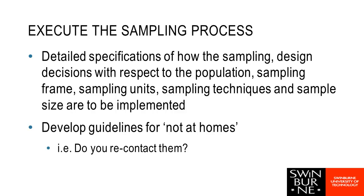Once we've figured out how many people and what mode — our sampling frame, whether we'll use telephone, web, or face-to-face — we're pretty much ready to execute the sampling process. We should figure out some guidelines. For instance, if we're going door-to-door and we randomly select a house but the person's not home, do we re-contact them? If we do, how many times — do we give them one or two chances, going back at different times or different days, in order for them to be part of our sample?